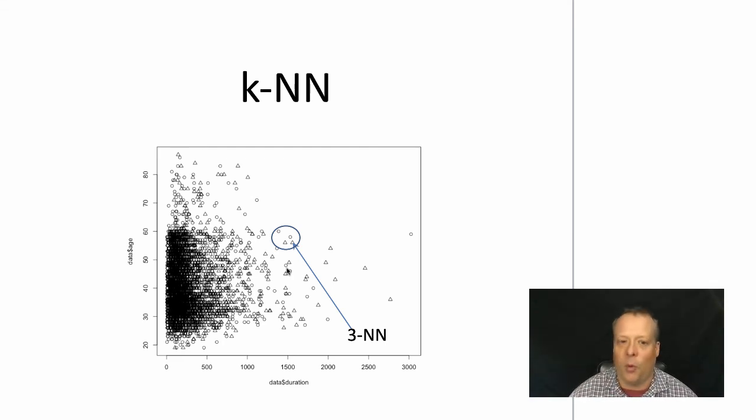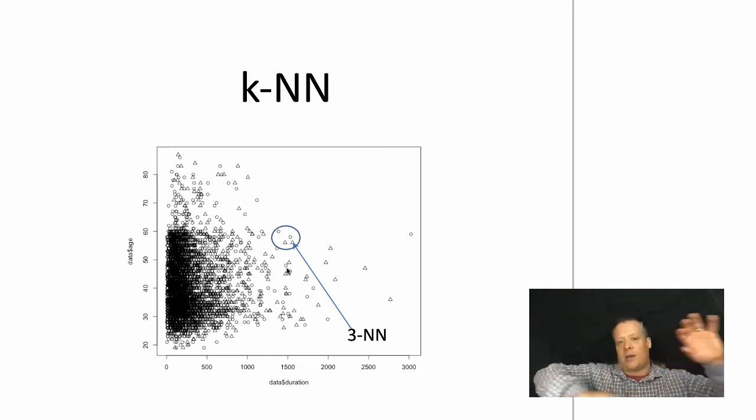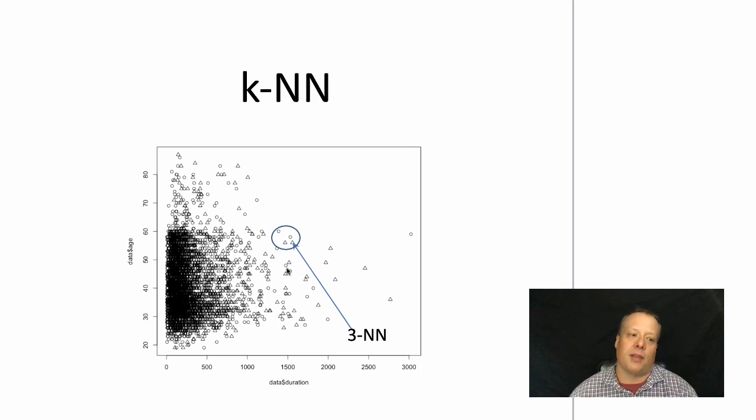But this is a simple way, doesn't necessarily always work that well. But if you plot your data and you see that it's naturally separating into the different classes, then k-nearest neighbors is going to work very well for that approach.